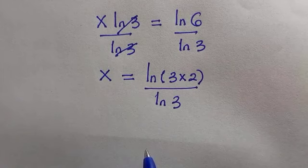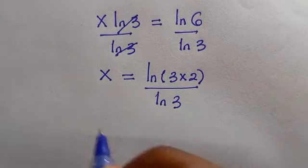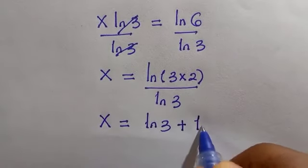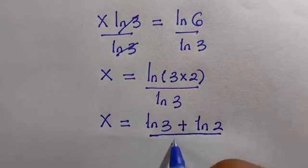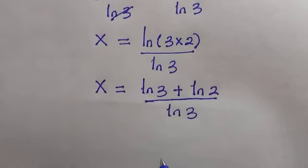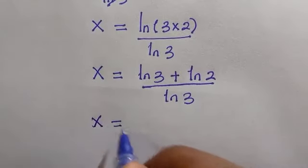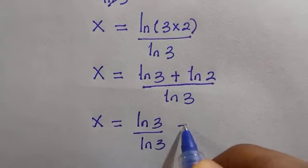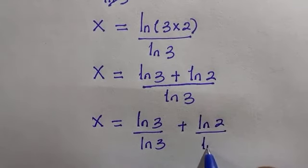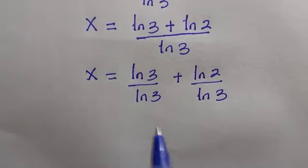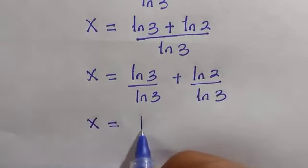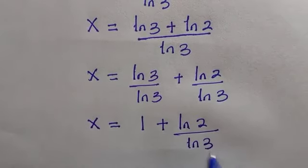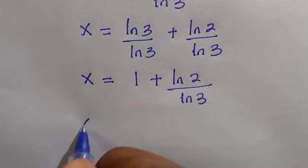From the law of logarithms, we can separate this with different ln, separated with addition: ln(3) + ln(2) divided by ln(3). We can divide this, so ln(3)/ln(3) plus the second one is ln(2)/ln(3). If ln(3) cancels ln(3), we have just 1 plus ln(2)/ln(3).